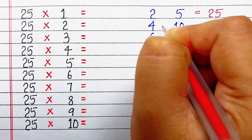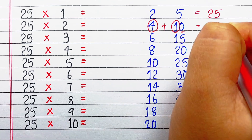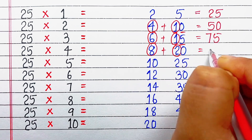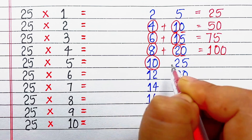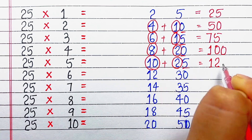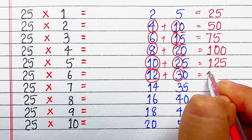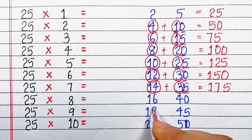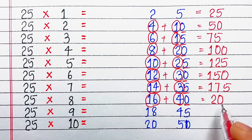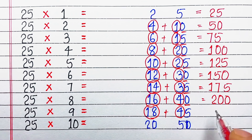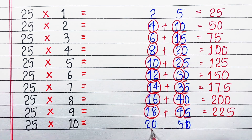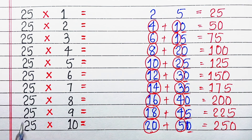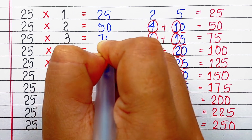So 2 and 5 gives us 25. We add the tens digit to the left number and write the unit digit as it is. So 4 plus 1 is 5, write 0, giving 50. Then 6 plus 1 is 7, write 5, giving 75. Then 8 plus 2 is 10, write 0, giving 100. Then 10 plus 2 is 12, write 5, giving 125. Then 12 plus 3 is 15, write 0, giving 150. Then 14 plus 3 is 17, write 5, giving 175. Then 16 plus 4 is 20, write 0, giving 200. Then 18 plus 4 is 22, write 5, giving 225. Lastly 20 plus 5 is 25, write 0, giving 250. With this we have got the table of 25.